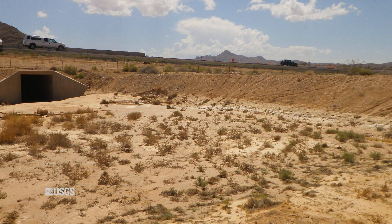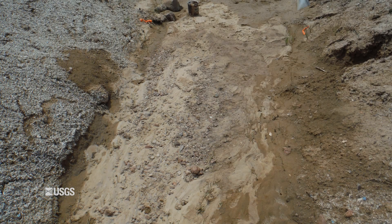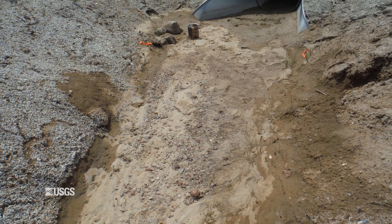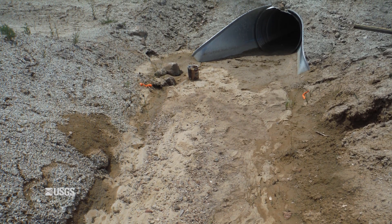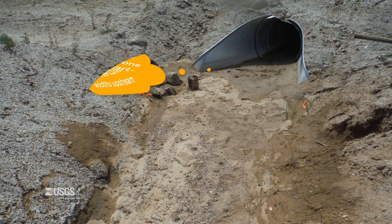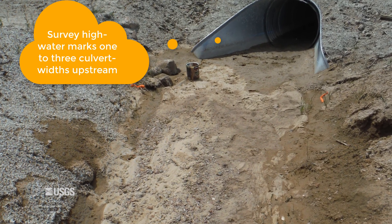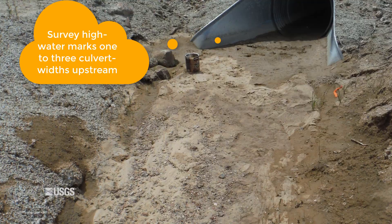The proper techniques for identifying, flagging, and surveying high watermarks can be found in other videos. Where do we want to survey these high watermarks? During the flood, depending on the height of the water, there may have been drawdown or a drop in the water surface at the culvert entrance. You are going to start surveying the high watermarks at least one to three culvert widths upstream from the entrance to ensure you are not only in this zone of drawdown.